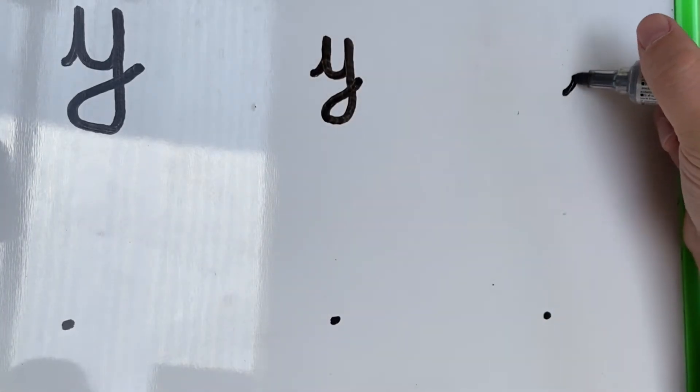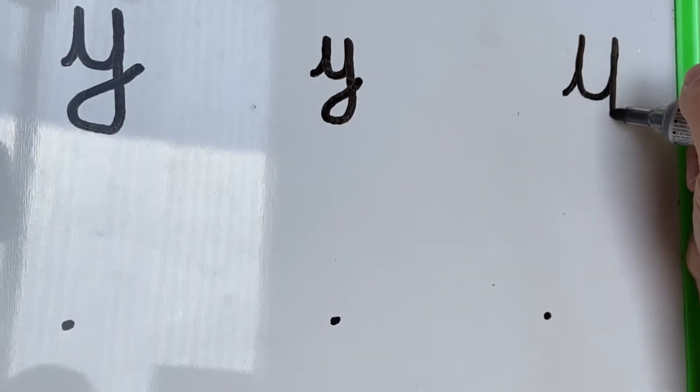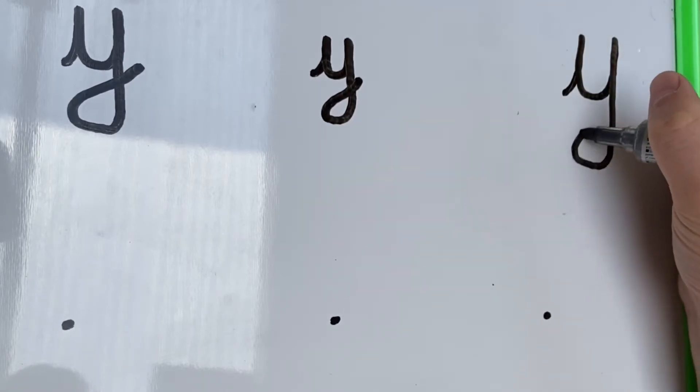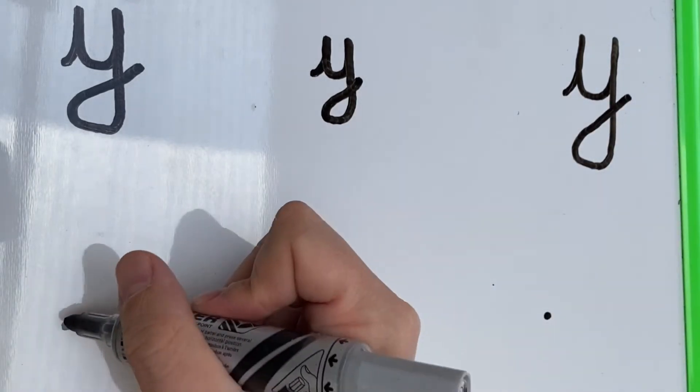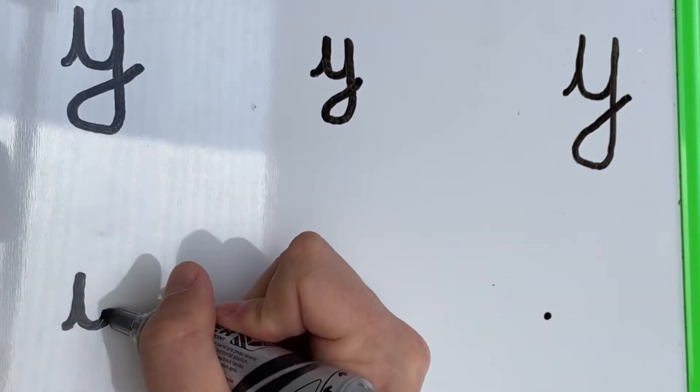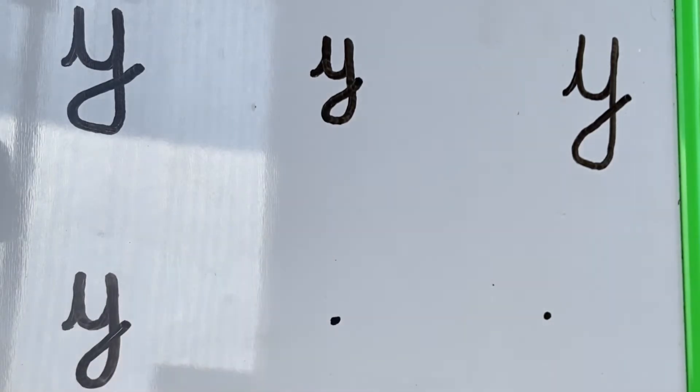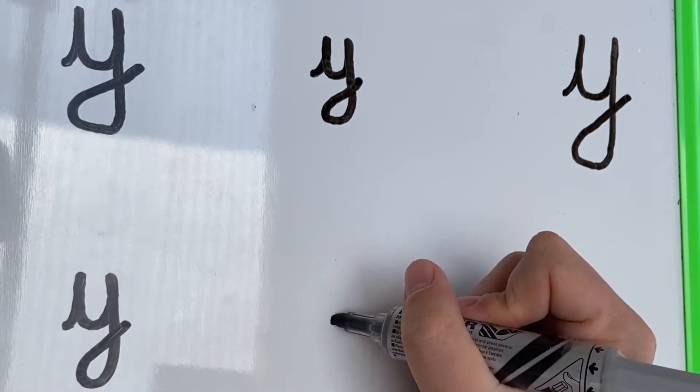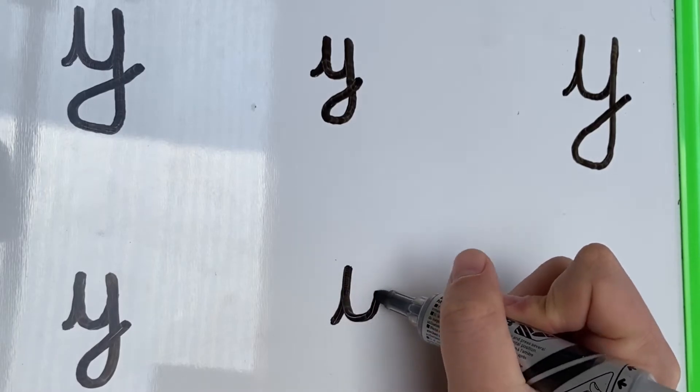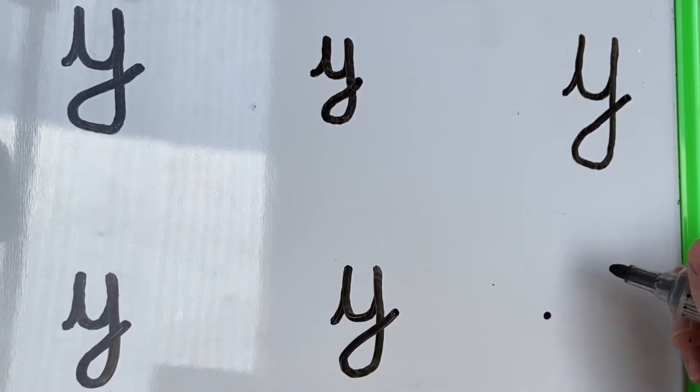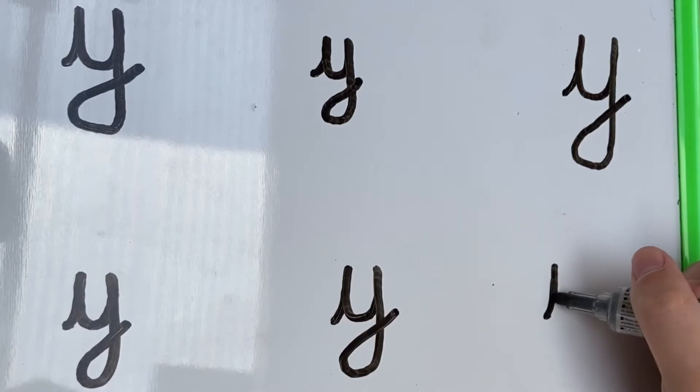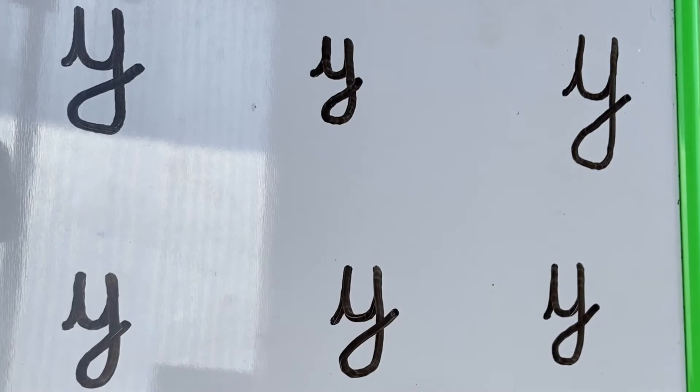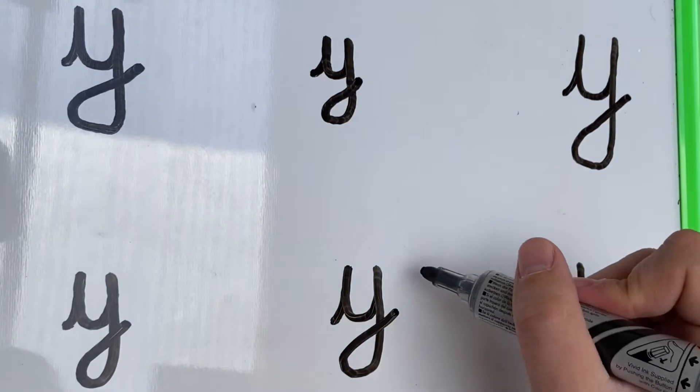Keep practicing, starting your letter on the dot and following the same direction as we're doing here. Don't worry too much about size at the moment. We'll focus on that in stage two. Last one then. So we start at the dot, up, down and round, up, down and under, loop, hook. Now choose your favourite letter Y and give it a tick before moving on to stage two.